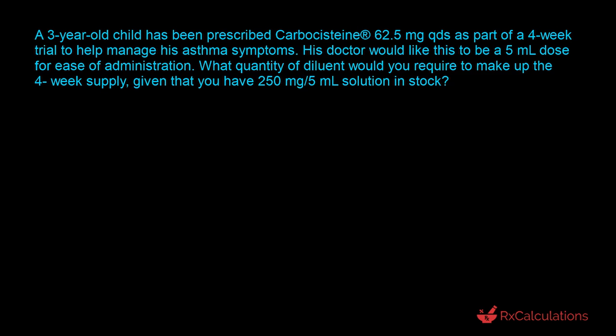Let's reflect on the question. The goal is to ensure that each time this three-year-old patient takes the carbocysteine, they're going to get 62.5 milligrams in each 5 ml dose. Your starting stock solution is 250 milligrams per 5 ml — essentially 50 milligrams per milliliter if you simplify the ratio.